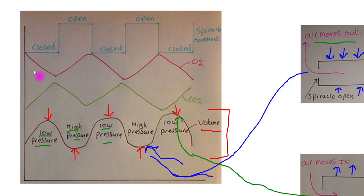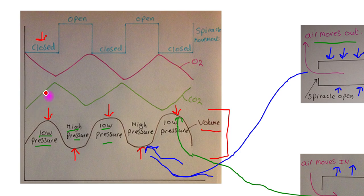When the spiracle is closed, carbon dioxide accumulates within the tracheal system because it diffuses out of the insect's cells and enters the tracheoles. This accumulation of carbon dioxide is the stimulus that causes the spiracle to open. When the carbon dioxide level gets high enough, the spiracle opens.